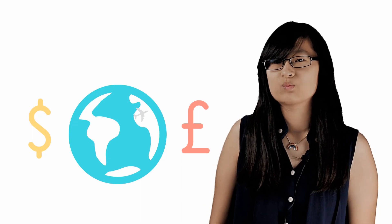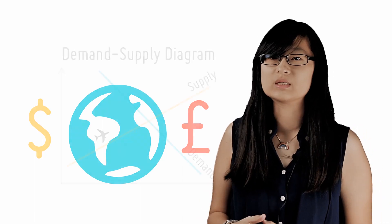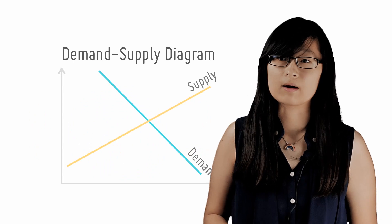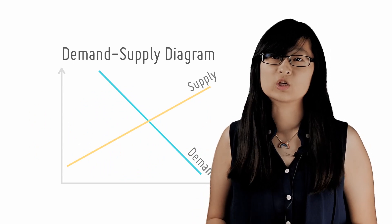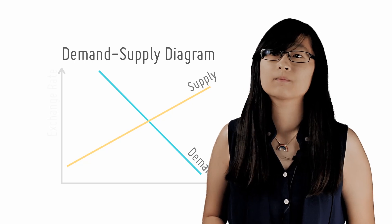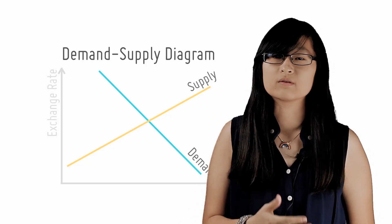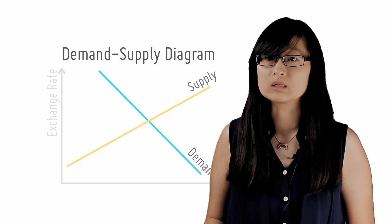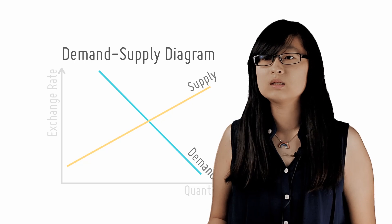H2Econs is rather obsessed with graphical illustrations. So let's start with showing how the equilibrium of exchange rate is determined using a demand and supply diagram. The diagram shows the demand and supply of Singapore dollars in the foreign exchange market or forex market. On the y-axis is exchange rate, which shows the price of Singapore dollars in another currency, in this case, USD. The x-axis is quantity of Singapore dollars.